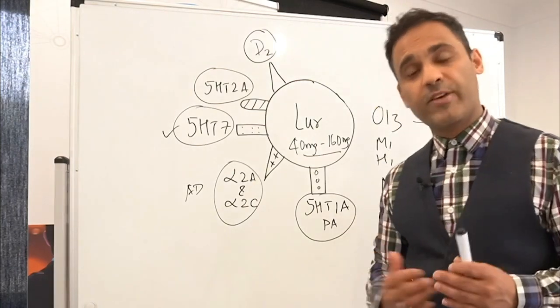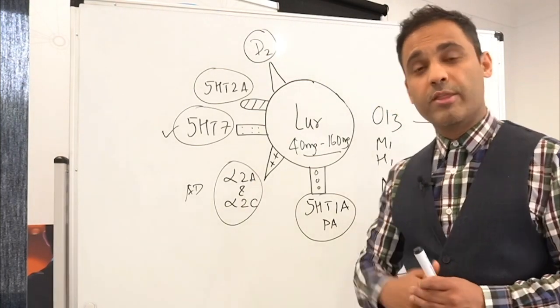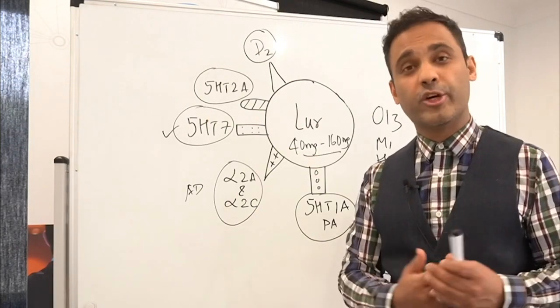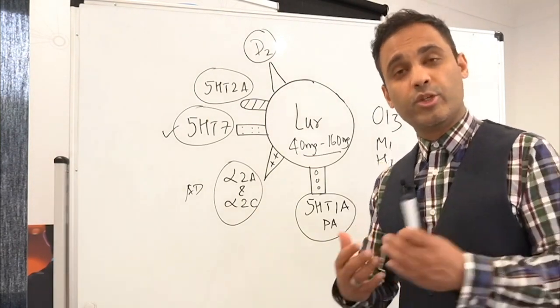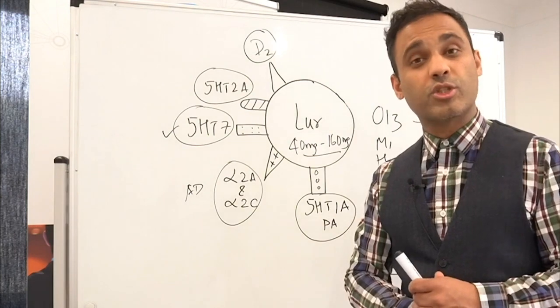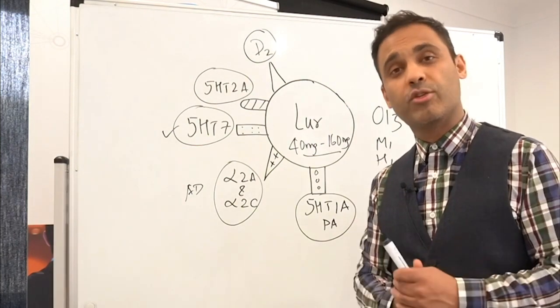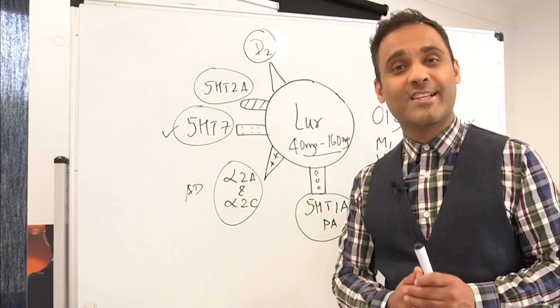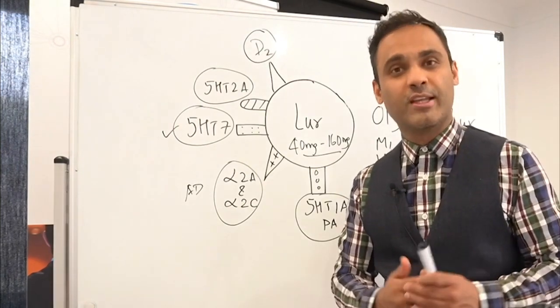So that's lurasidone in a nutshell. In the next video, I will take you through the other antipsychotic, which is a partial agonist, which is brexpiprazole. You've probably heard of aripiprazole. We do have brexpiprazole in the market now, which is also metabolically friendly, and I'll take you through that. So I hope you've enjoyed this particular video. Take care, stay safe. I'll see you soon in another Hubbyte.